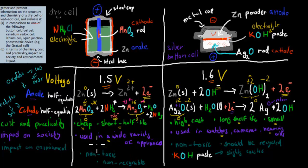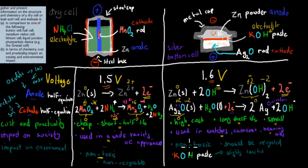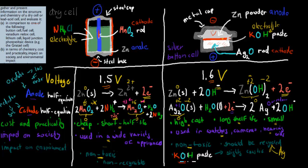For environmental impact, the dry cell is non-toxic, which means it doesn't have a major negative impact on the environment, though it is non-recyclable. Since it's not toxic, that's not a massive problem. The silver button cell is also non-toxic, but it should be recycled because of the silver content — we want to recover that silver. The one negative is that the potassium hydroxide electrolyte paste is slightly caustic, meaning it can cause burns, so you don't want to get it on your skin.